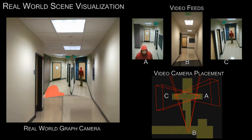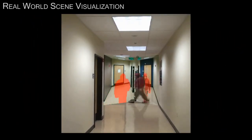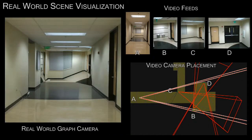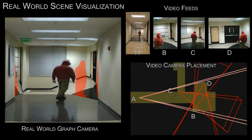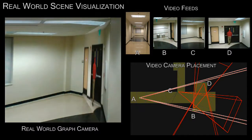Pixels taken from the background images are of course not live and they are marked as uncertain using a red highlight. In this example, the graph camera integrates four video feeds. The user can zoom in to leverage the full resolution of video feeds of distant frusta.